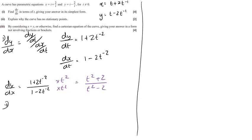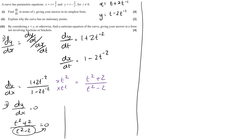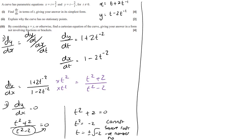Part two: explain why the curve has no stationary points. At a stationary point dy/dx = 0, so (t² + 2)/(t² − 2) = 0, meaning t² + 2 = 0, so t² = −2 and t = ±√(−2). Since you cannot square-root a negative number, there are no real solutions and therefore no stationary points.